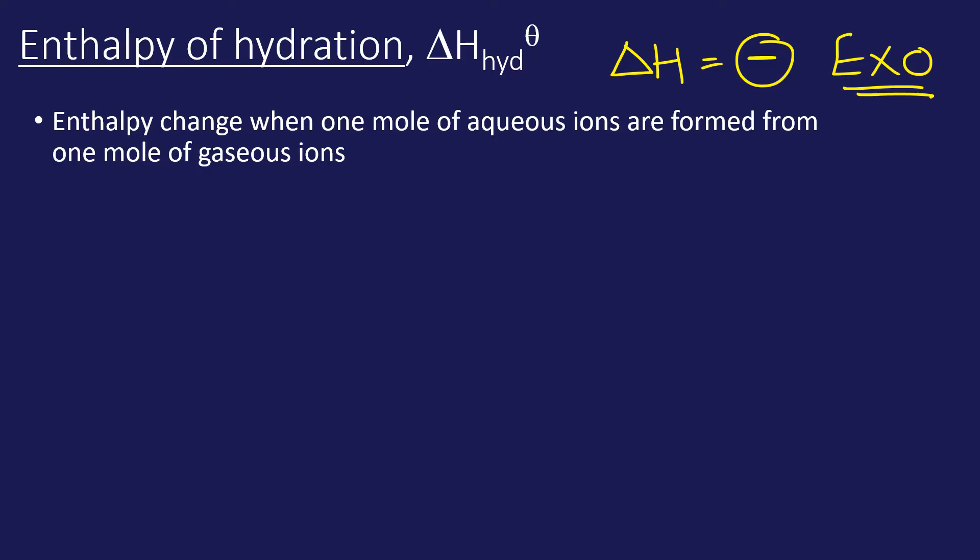The previous one on formation can be exo, can be endo. Let's look at some examples then. Chloride, sodium, and strontium. Chloride is Cl minus. All we really need to do here is change the state symbol. We're going to go from gaseous to aqueous. That's the first one done.